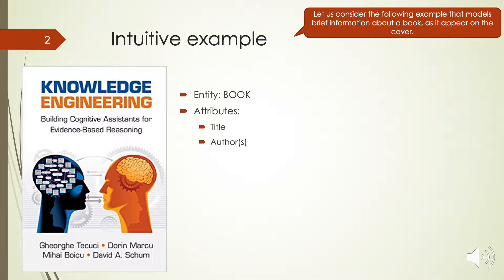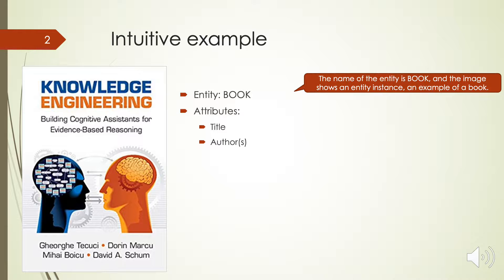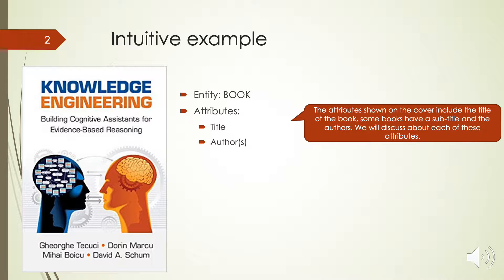Let us consider the following example that models brief information about a book as it appears on the cover. The name of the entity is Book, and the image shows an entity instance — an example of a book. The attributes shown on the cover include the title of the book, some books may have a subtitle, and the authors.